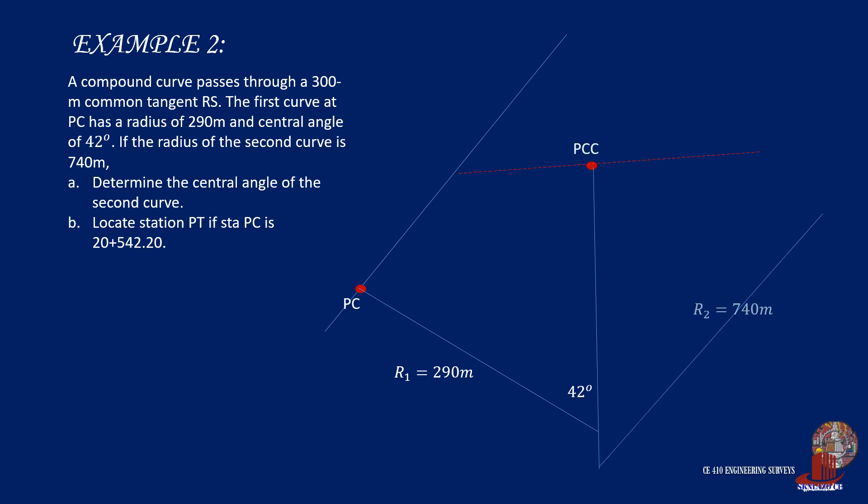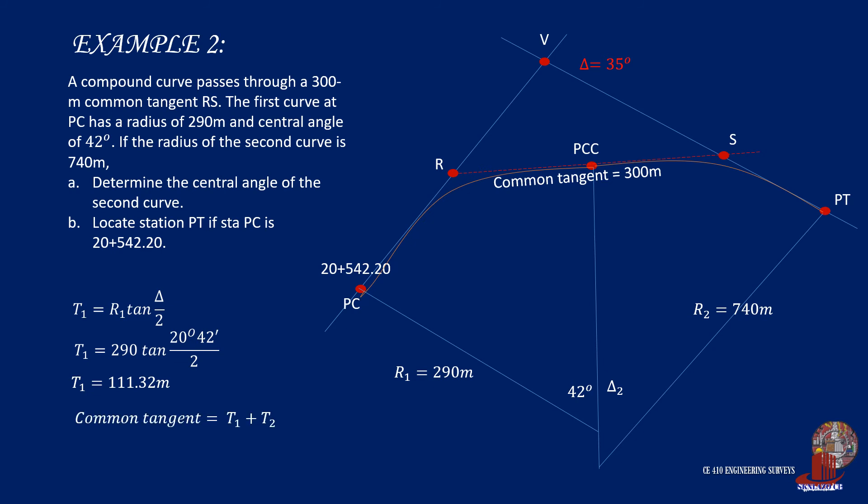Determine the central angle of the second curve, and locate station PT if station PC is 20 plus 542.20. With radius R1 and delta 1 given, we can easily have tangent 1 from the formula to be taken as 111.32 meters. The tangent of the second curve can then be identified by deducting T1 from the length of the common tangent, and that would bring us 188.68 meters.